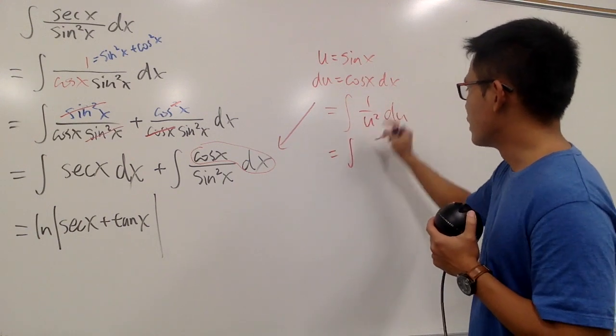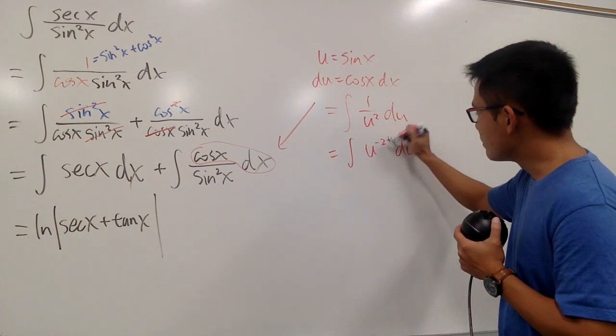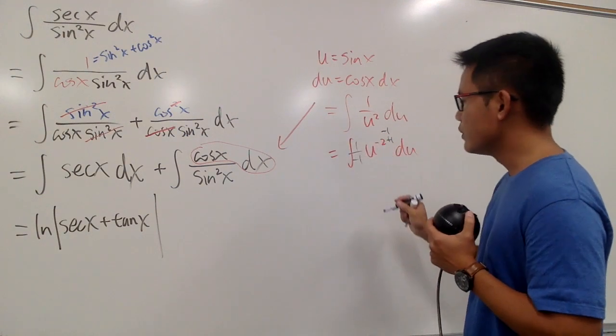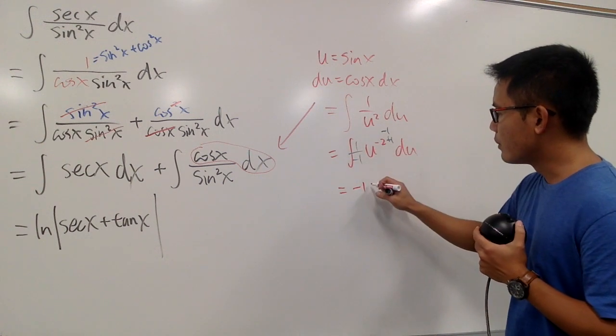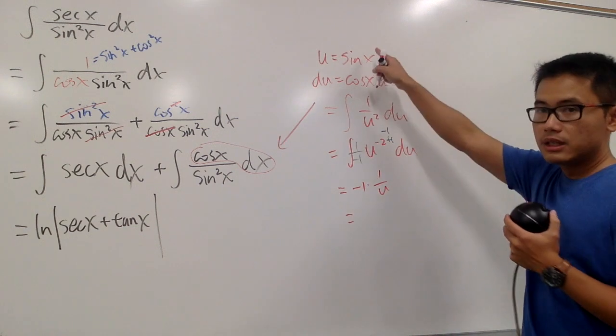And if you would like, let me just show you guys all the work. This is the same as saying u to the negative 2 du. You add 1 to the power, become negative 1, divided by the new power, which is 1 over negative 1. So, this is negative 1, usually negative 1 power, which is the same as 1 over u. What's u? It's sine x.